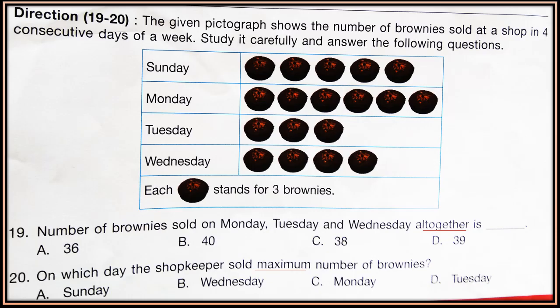Questions 19 and 20. The given pictograph shows the number of brownies sold at a shop in 4 consecutive days of a week. Study it carefully and answer the following questions. Now see the pictograph and see the brownies sold on each day. One brownie icon stands for 3 brownies. So calculate for Sunday, Monday, Tuesday, Wednesday how many brownies were sold.